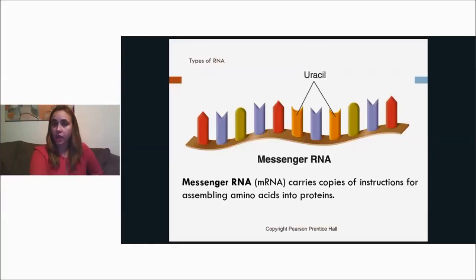Actually, a way to remember which bases are contained in RNA is that it makes the acronym GUAC. So if you think of guacamole, GUAC are the same as the bases in RNA, guanine, uracil, adenine, and cytosine. The messenger RNA carries copies of instructions for assembling amino acids into proteins.